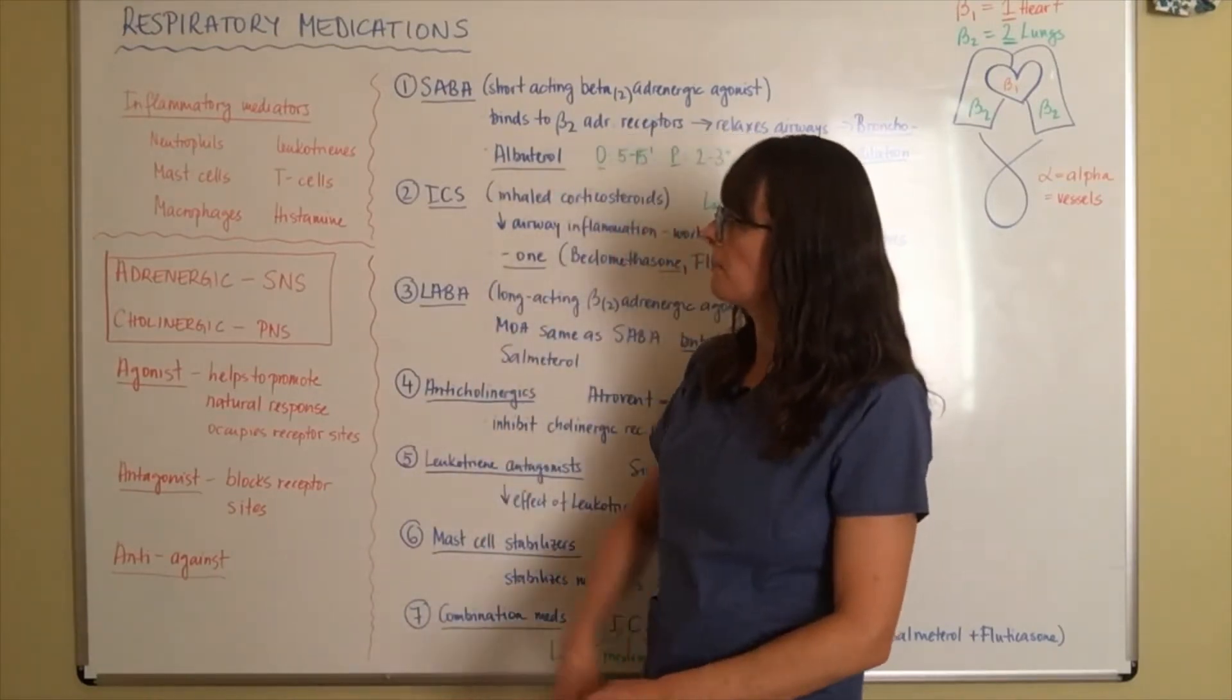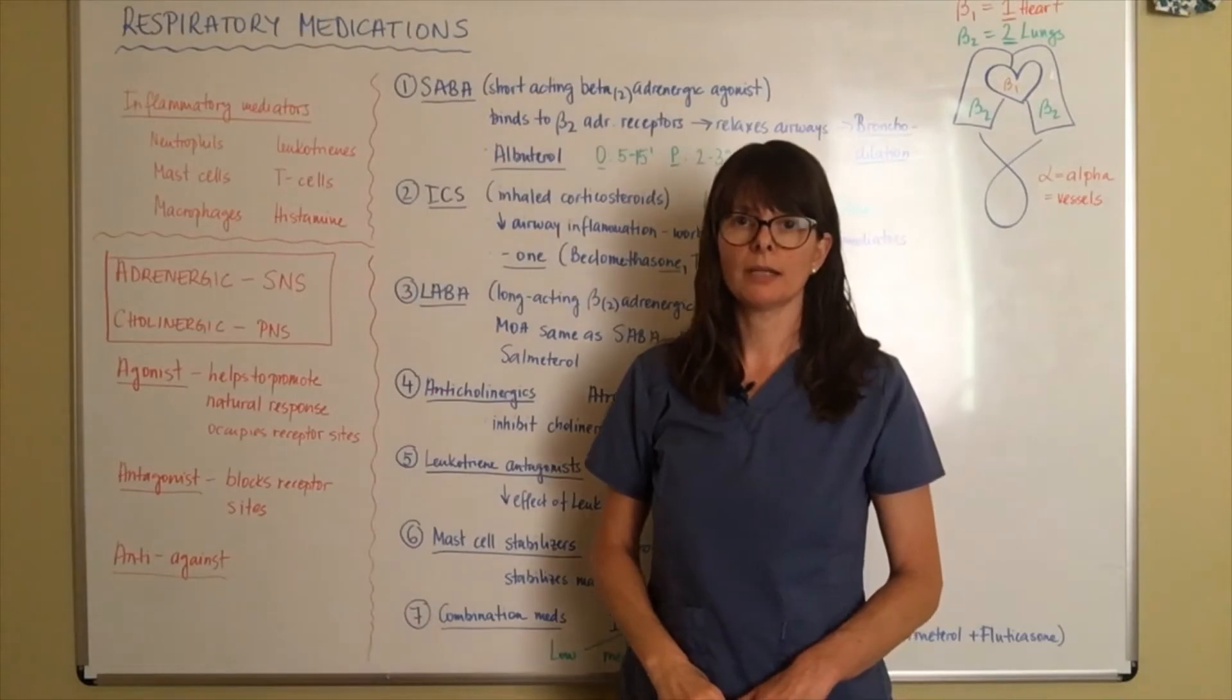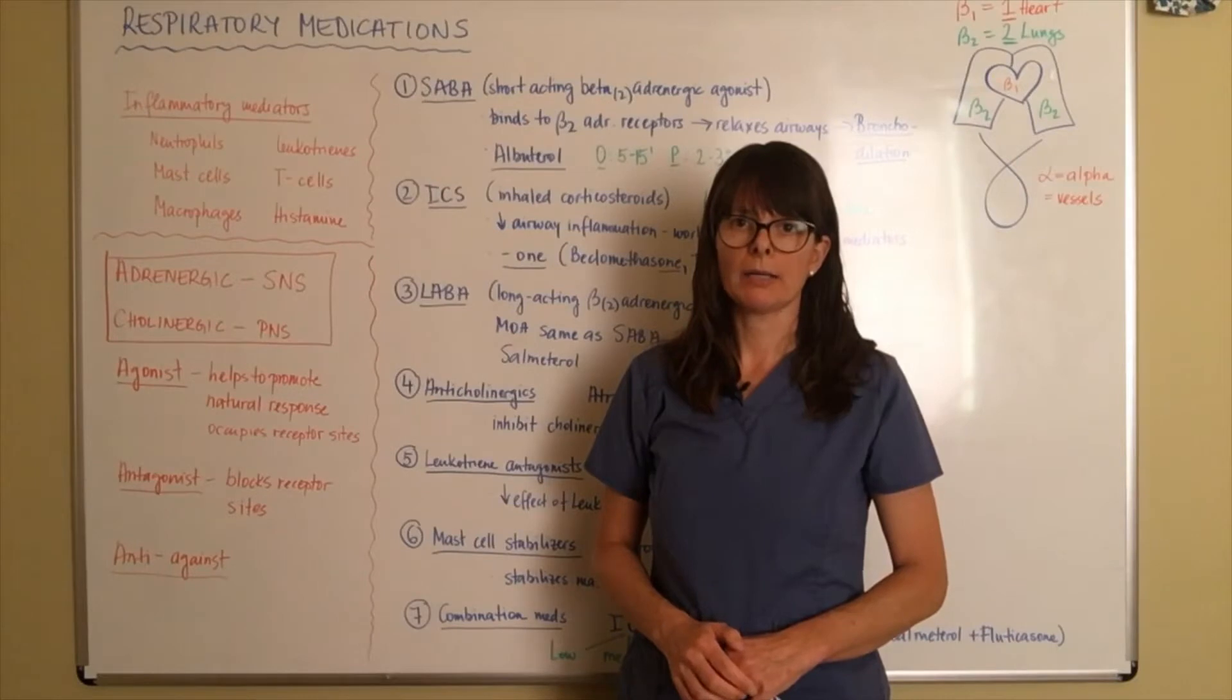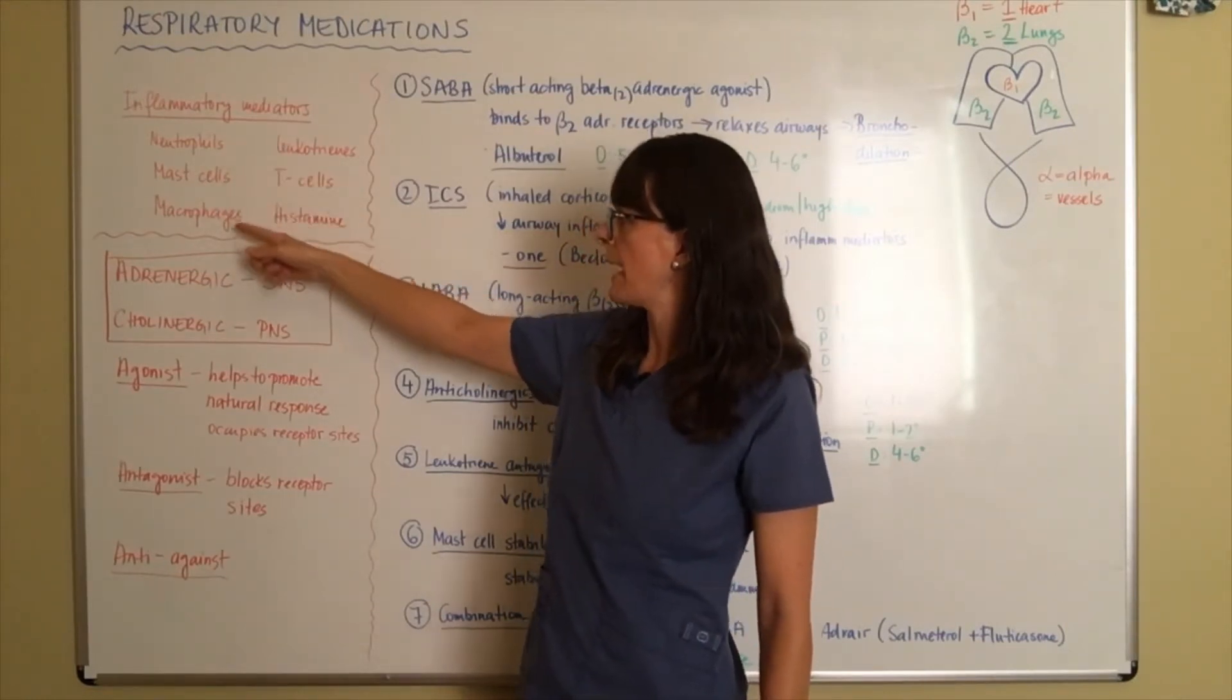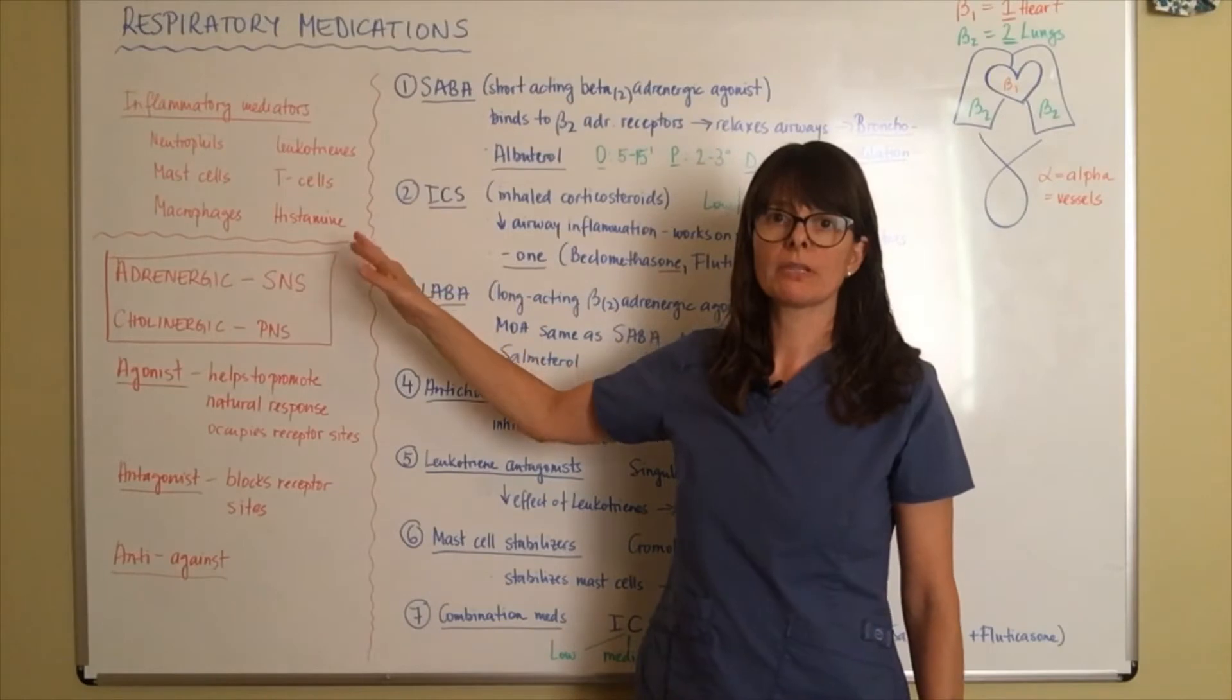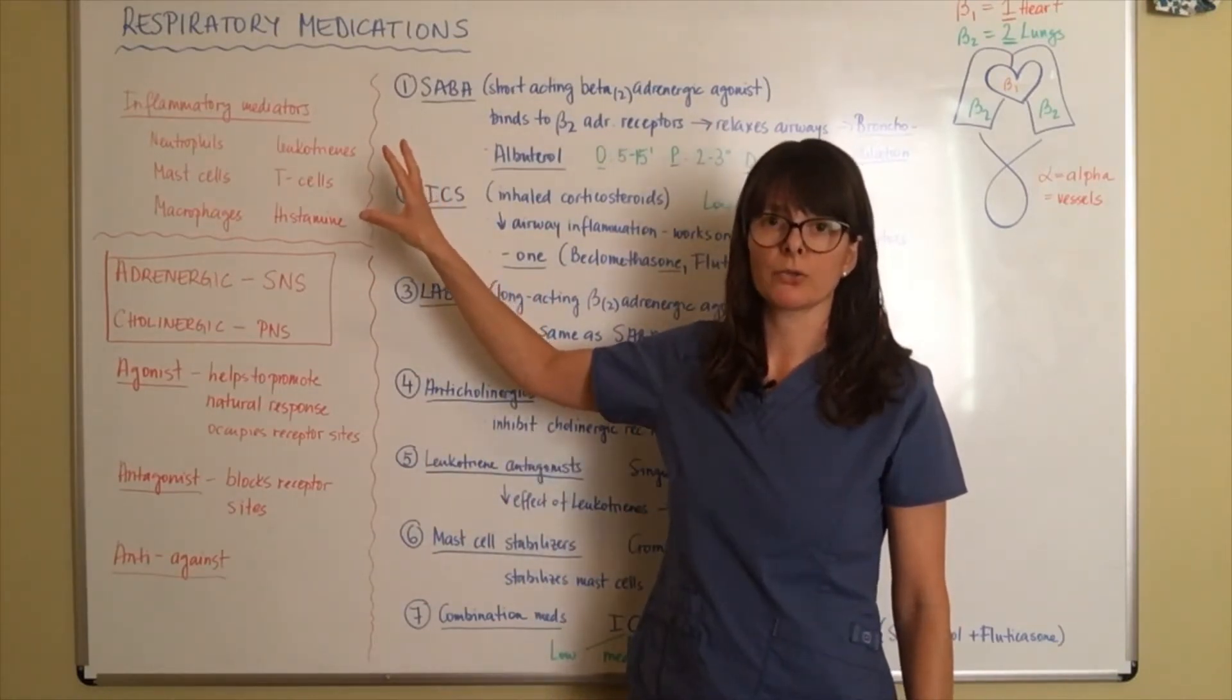So I have written down here some basic terms that hopefully will help you be able to dissect the mechanism of action of these medications and then understand how they work and also how they're indicated. So first of all I just wanted to review inflammatory mediators. You might remember from your physiology class all the different cells that help us in providing inflammation when we are battling infection, disease, or allergies. Some of those mediators I've written down here: neutrophils, mast cells, macrophages, leukotrienes, T cells, and histamines. Now remember these are only a few of the inflammatory mediators. There's a lot of others, but these are the most important that we will apply here to the respiratory medications.